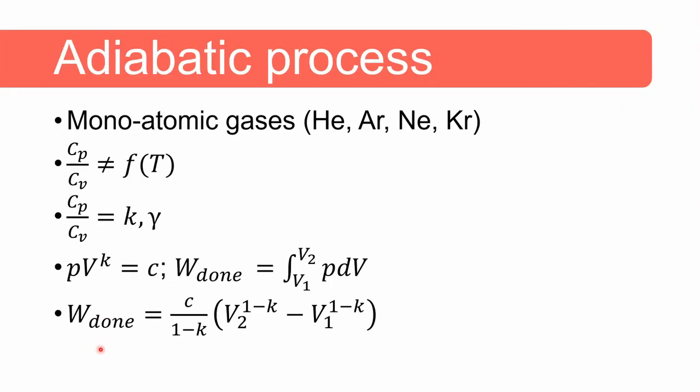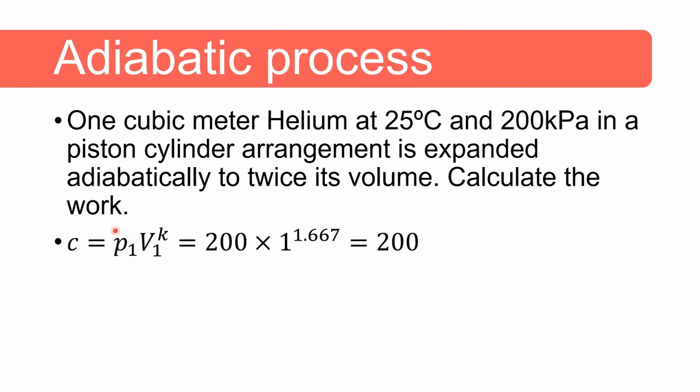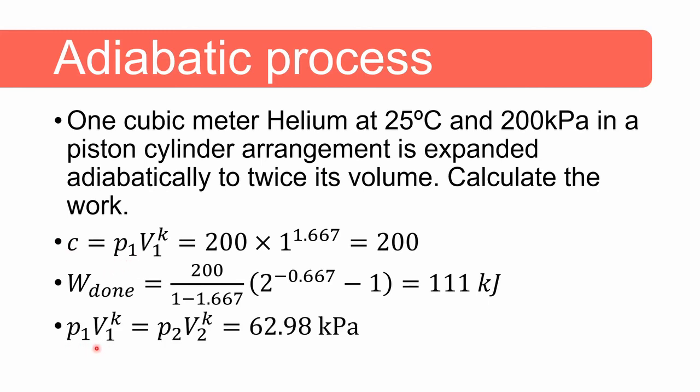If we look at the equation that we derived we only need the value c for this problem as we have been given volume two and volume one. We also know the pressure at point one so we can get the value of c. This is done by just multiplying the pressure at state one by the volume at state one to the power of k and this value of k you can get from your tables in your handbook, that's 1.667, and we get a value of c of 200. We can substitute that value in the equation we derived and we get a value for the work done is 111 kilojoules. Just for interest sake because we've got the value of c we can actually go and determine the pressure at state two by saying that the relationship of state one between pressure and volume is the same at state two and then the only unknown in this equation is p2 so we can get an answer for the pressure at state two is 62.98 kilopascal.